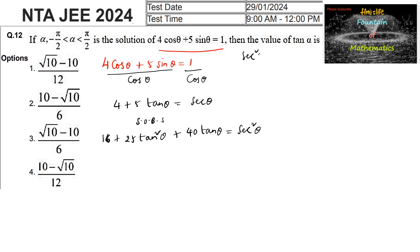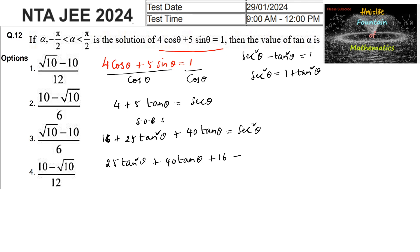Using the identity sec²θ - tan²θ = 1, we write sec²θ = 1 + tan²θ. Substituting, 25tan²θ + 40tanθ + 16 - (1 + tan²θ) = 0, which simplifies to 24tan²θ + 40tanθ + 15 = 0.